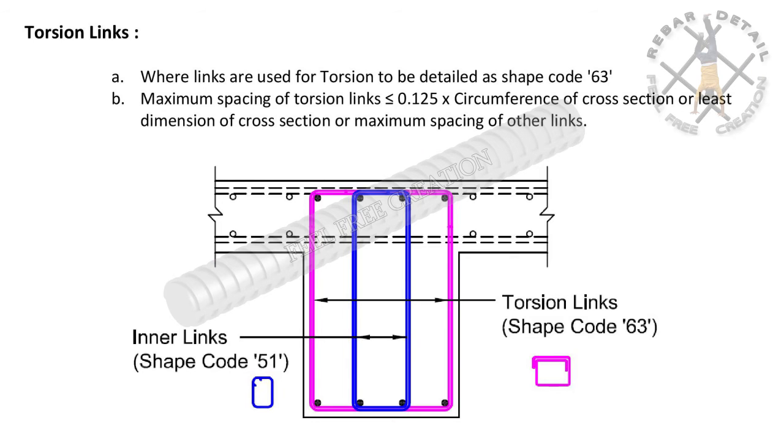If design indicates torsion links, for example capping beams, transfer beams etc, we need to provide like shape code 63.